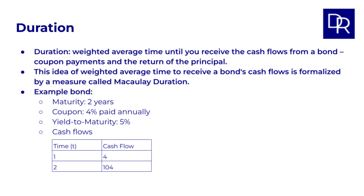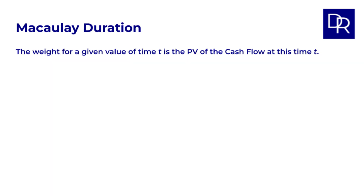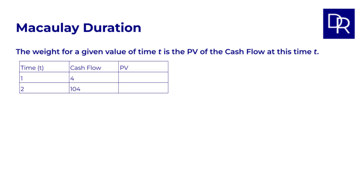We want to give each of these values for t a weight to calculate the weighted average. The weight we will use for a given value of time t is the present value, or PV, of the cash flow occurring at this time t. I'll go through it in detail here, and you can see the full details in the attached spreadsheet. If you need a reminder on how to calculate present value, have a look at our lesson on time value of money — see the link above.